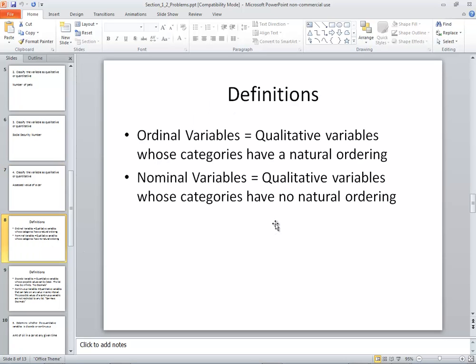Now we've got two more definitions here. Ordinal variables, qualitative variables whose categories have a natural ordering. And then we also have nominal variables, where you've got qualitative variables whose categories have no natural ordering. If you think about qualitative, like a freshman, sophomore, junior, senior, those are not numerical, but they do have a natural ordering. You know, freshman first, and then sophomore, and so forth.